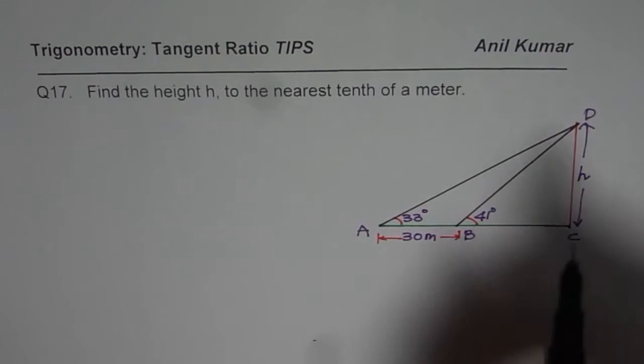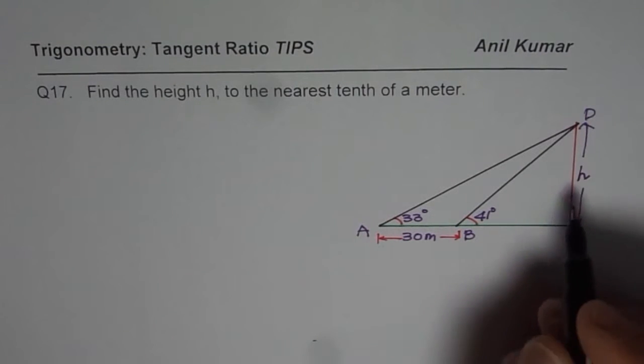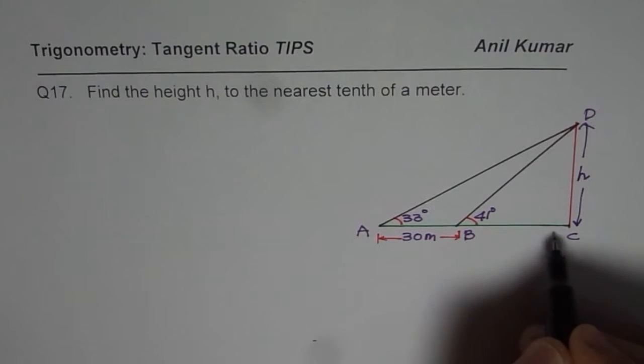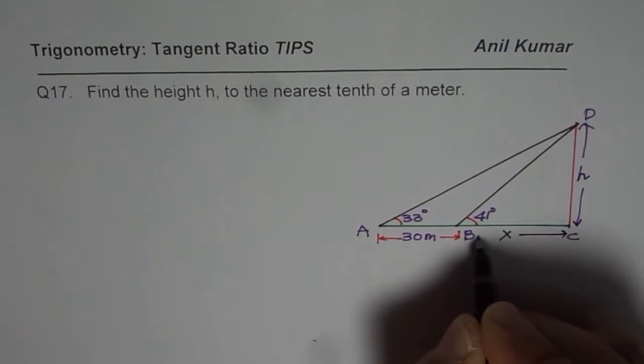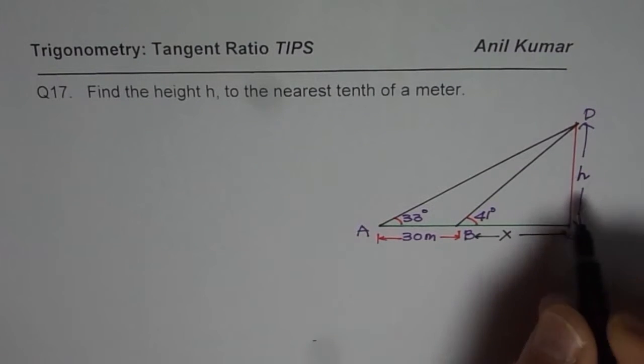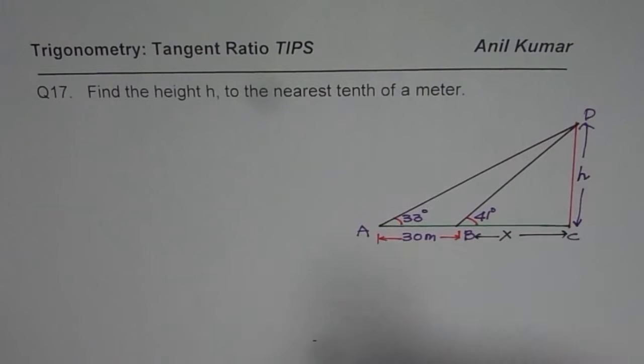Now I suggest that to find the height we need to first find the distance between B and C. So let me call that distance X. Once we find X, then we can use tangent ratio to find height. That is how we are going to do it.